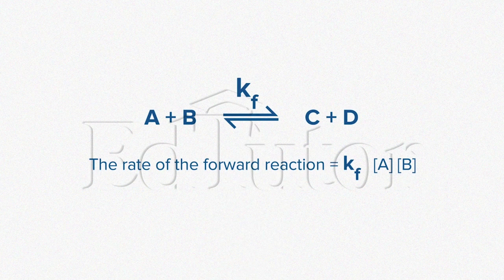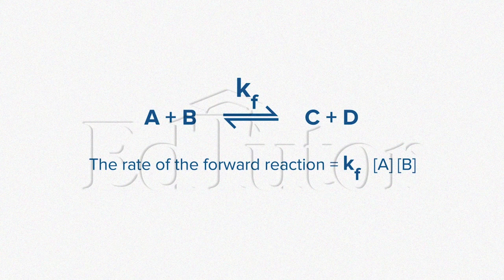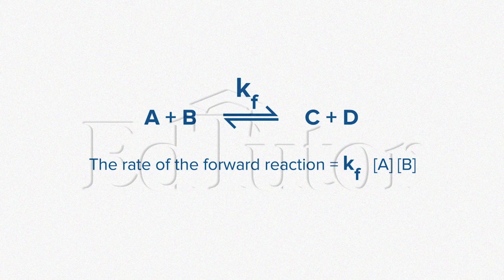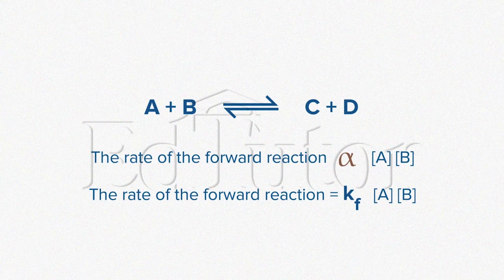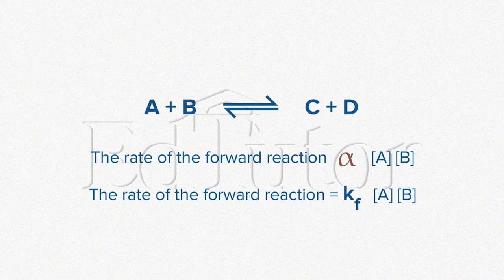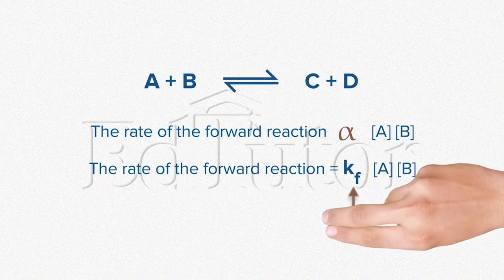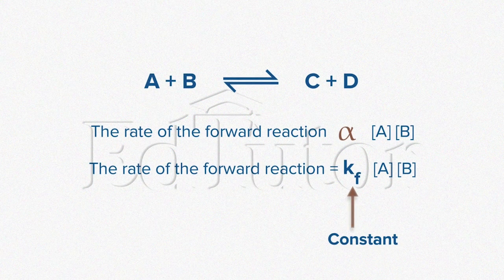Mathematically, the following equation can be represented as the rate of reaction equals the specific rate constant multiplied by concentrations of A and B. So, in that case, the proportional sign changes to the equal sign, and we insert KF into the equation as a constant.